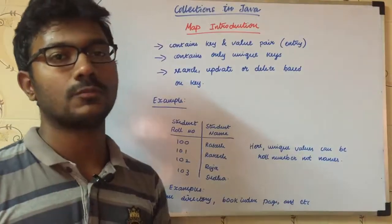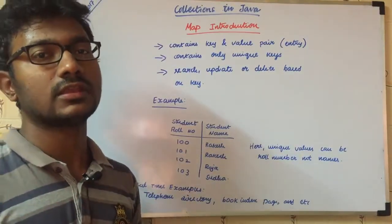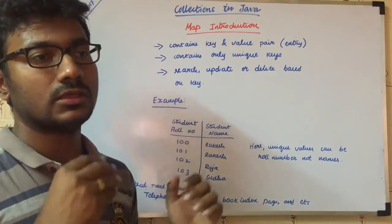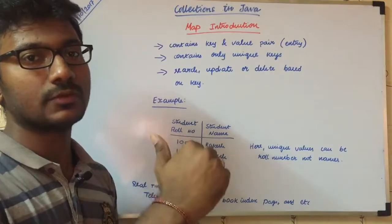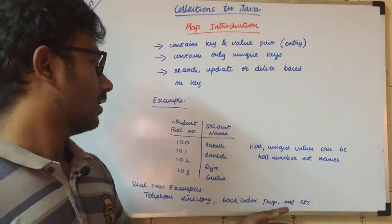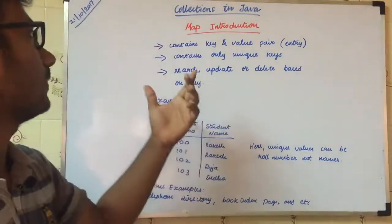Next example: book index. If you open a book, the index shows the page number pointing to the content. So the index page number points to the content. That is how this Map works.